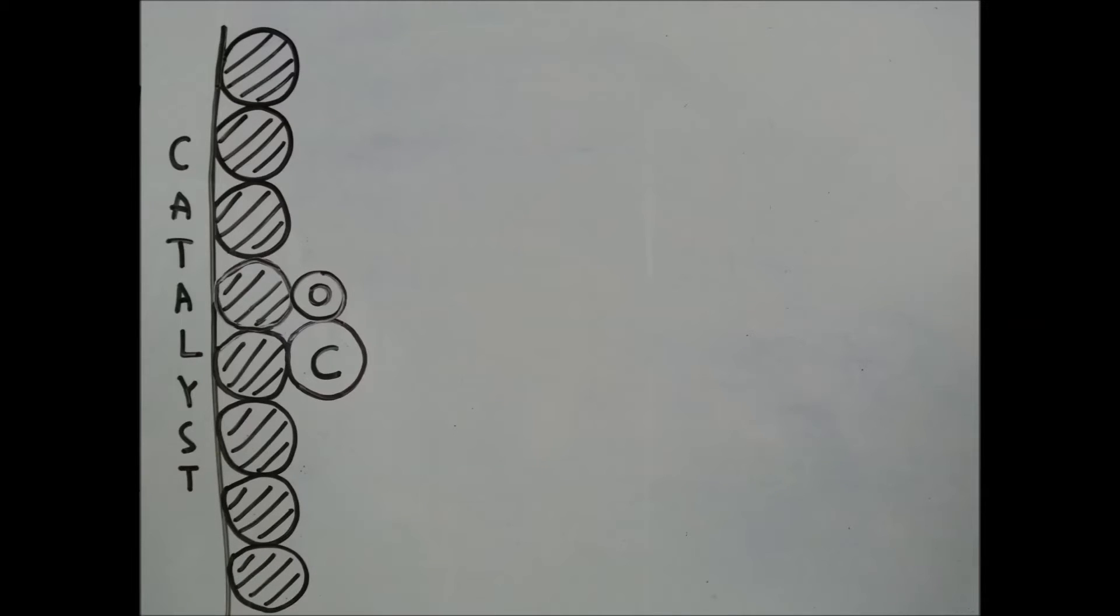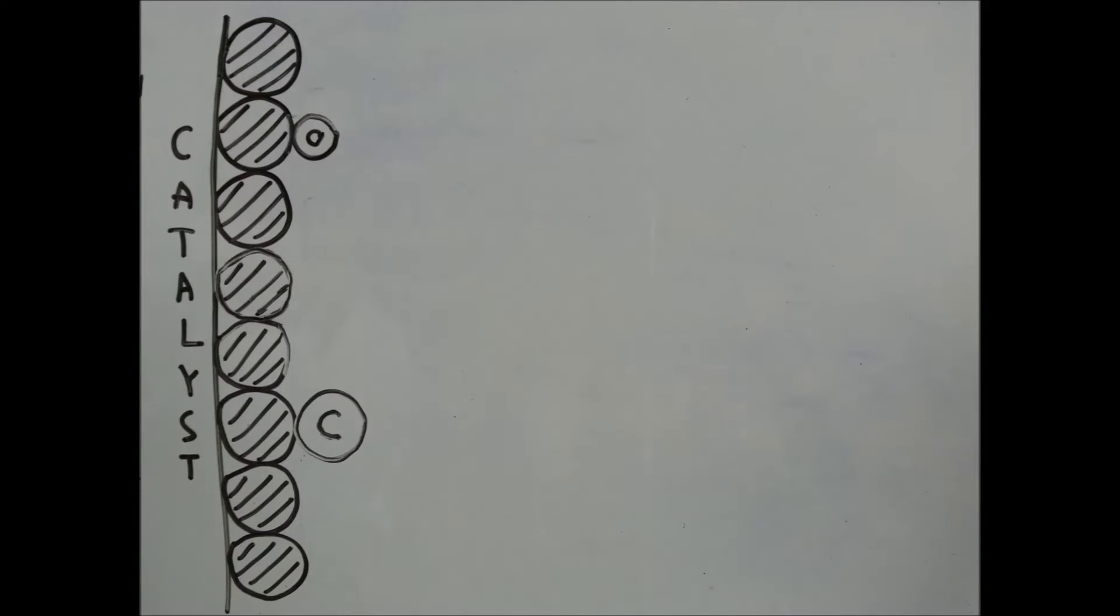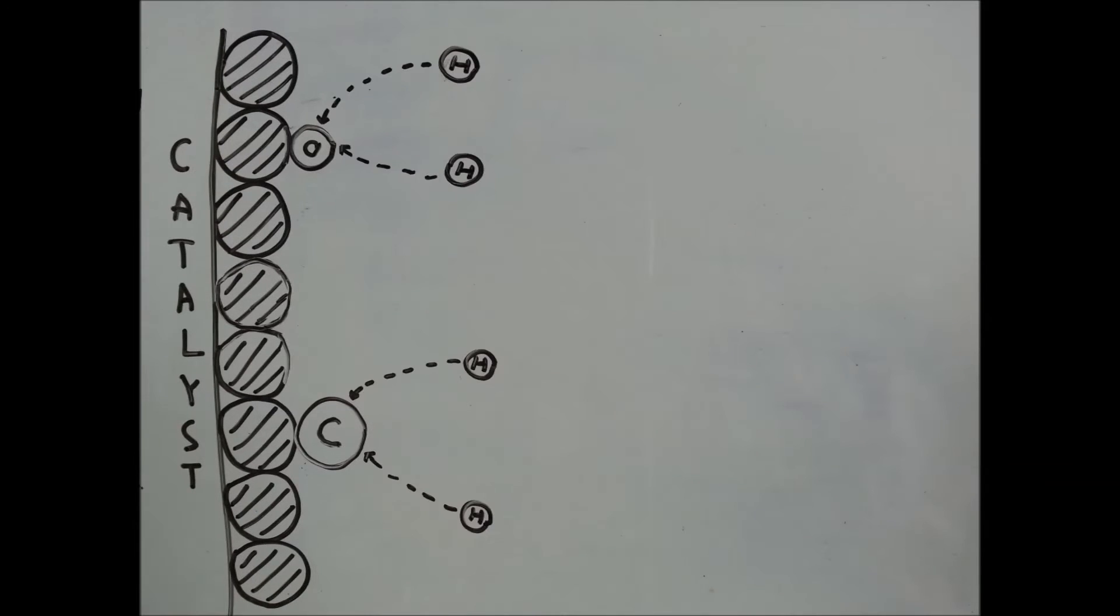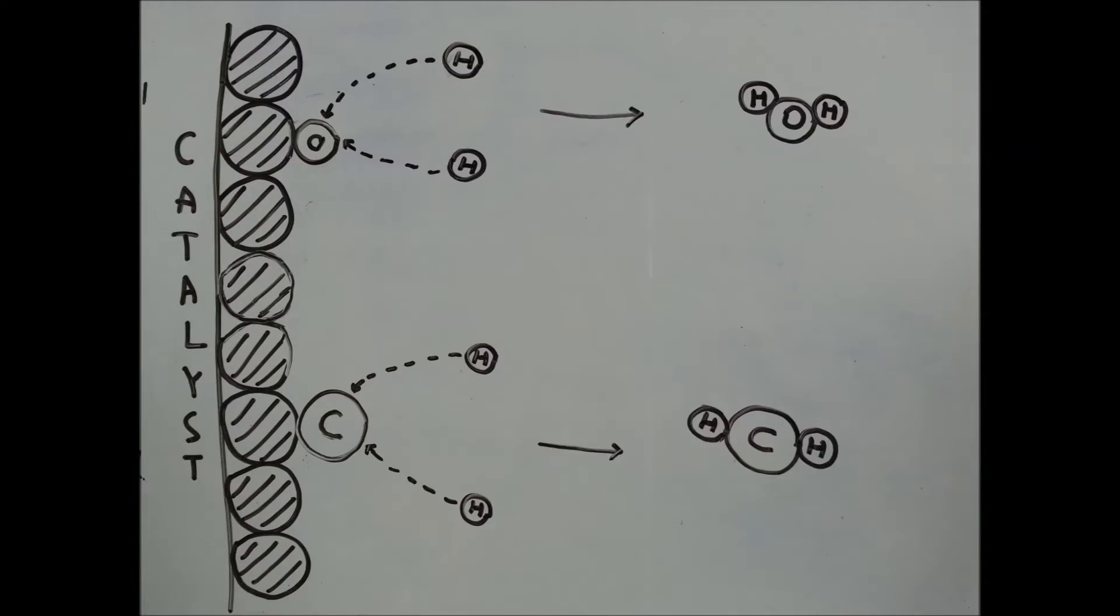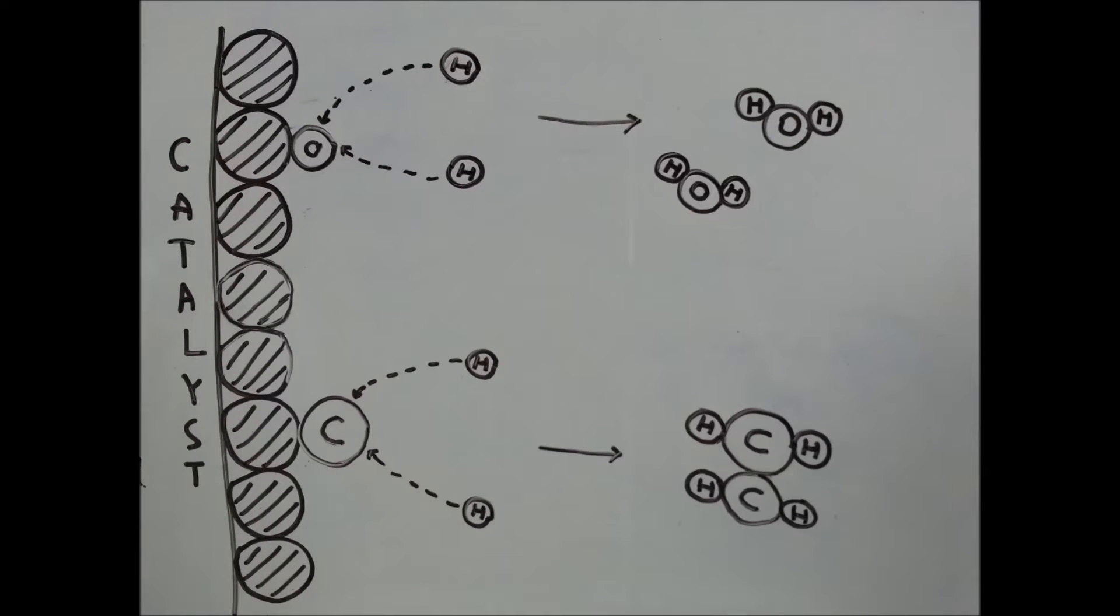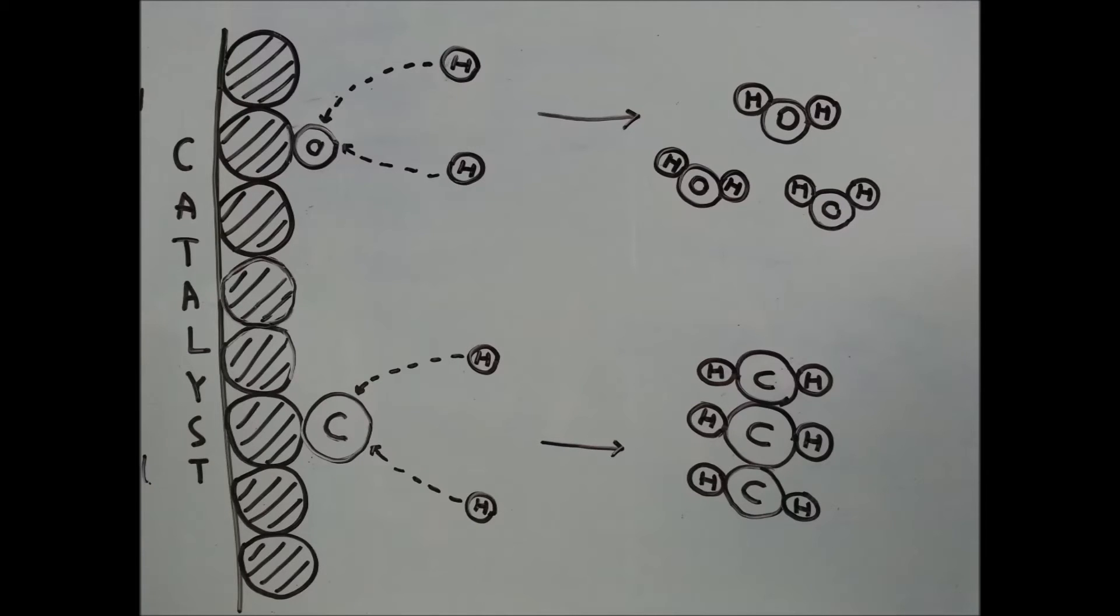At first, carbon monoxide molecules are split into carbon and oxygen atoms. The free hydrogen atoms are bonded to carbon and oxygen atoms respectively. Then, water and hydrocarbon molecules are formed. The reaction is repeated until long-chain hydrocarbons are obtained.